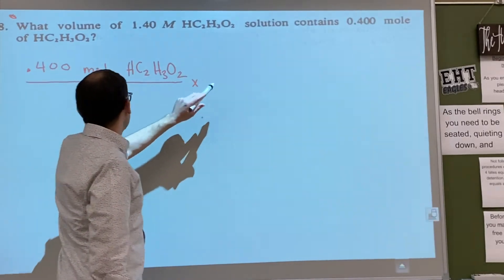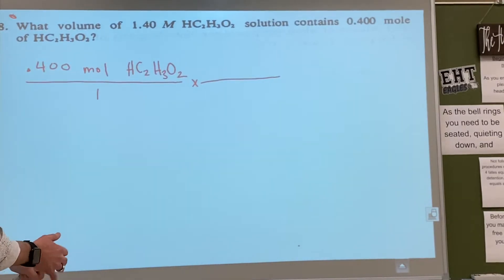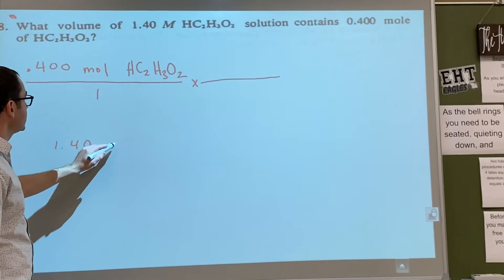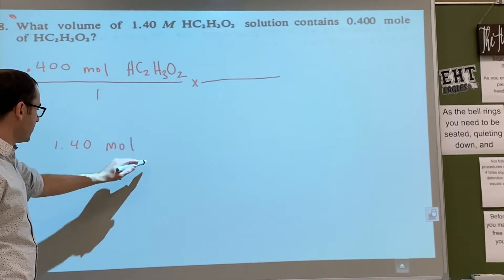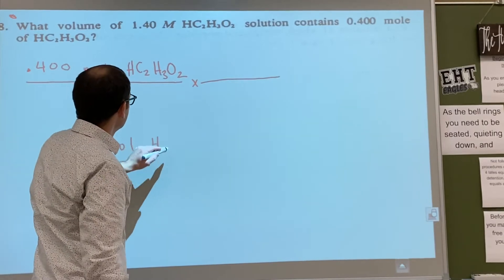Alright, what do we do next? Good, yeah, we need to use the molarity. The molarity is 1.40. Big M stands for moles per liter, right? And because we're talking about the acetic acid, it's going to be HC2H3O2.